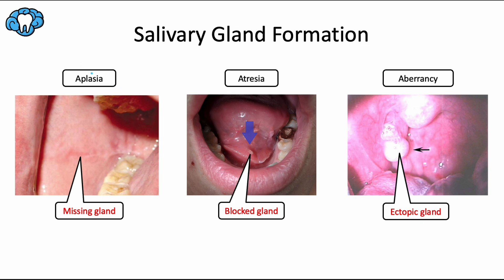Salivary gland aplasia or agenesis is the congenital absence of salivary glands. Usually the term relates to the absence of some or all of the major salivary glands, including the parotid, submandibular, and sublingual glands.